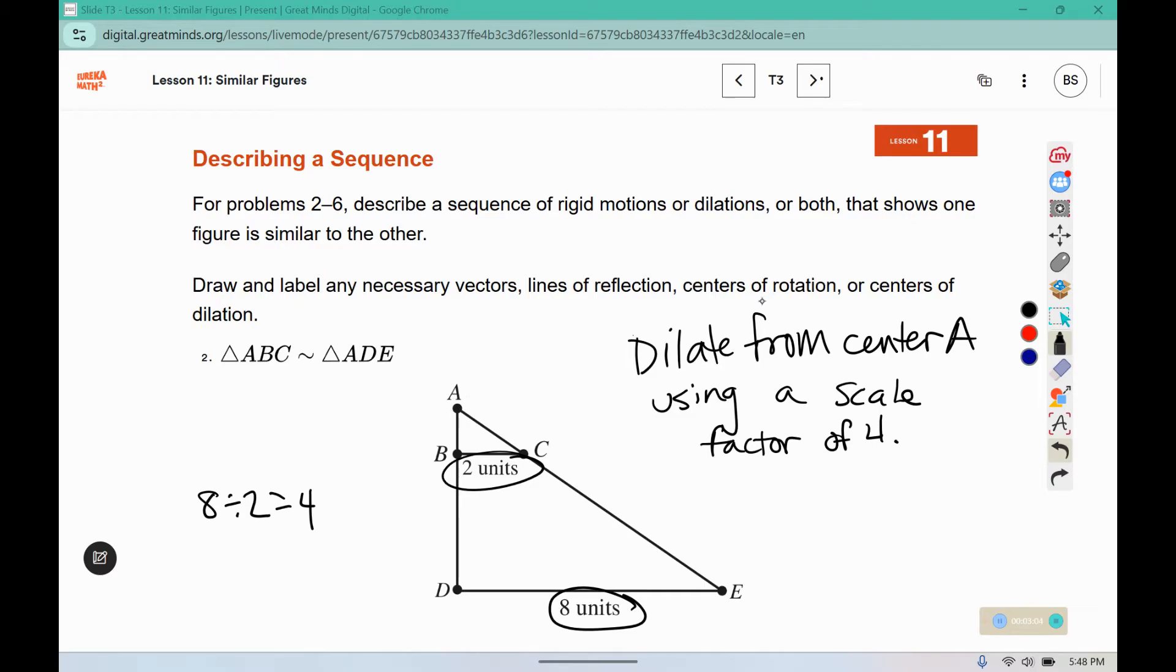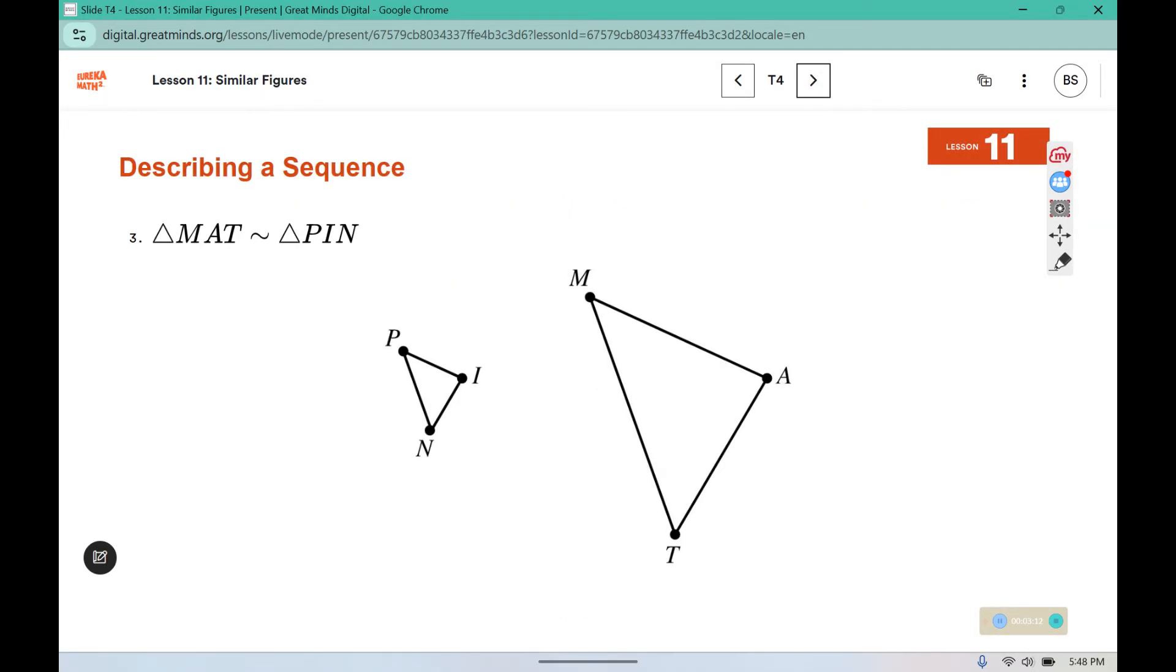A is already drawn in so we don't need to worry about centers of dilation because it's already there. Here, one of my students mentioned that you can translate and then dilate. If you use that method, draw in the vector and describe the translation you used and what point you dilated from.